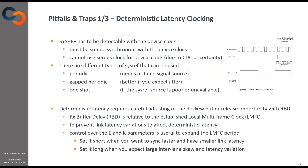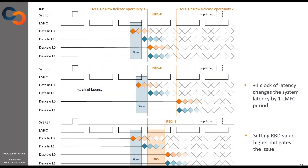You have to carefully adjust the RBD — the release buffer opportunity or delay — such that the data arriving to your system doesn't straddle both sides of the LMFC boundary, to prevent latency variations on the links from affecting your total deterministic latency. You can also control the LMFC period with the E and K parameters: set it short when you want to sync faster or have smaller link latency, or set it long when you expect larger inter-link skew.